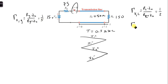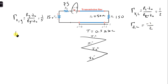From this, we can get the current reflection coefficient at the load, which is just the voltage reflection coefficient multiplied by minus one, giving us minus one half. And the reflection coefficient for the current at the generator is the voltage reflection coefficient at the generator multiplied by minus one, giving us minus one fifth.